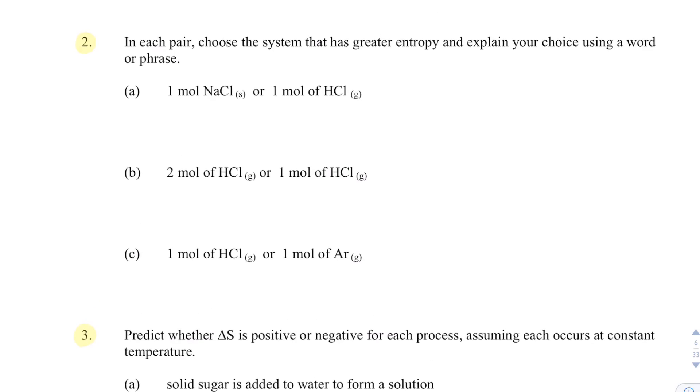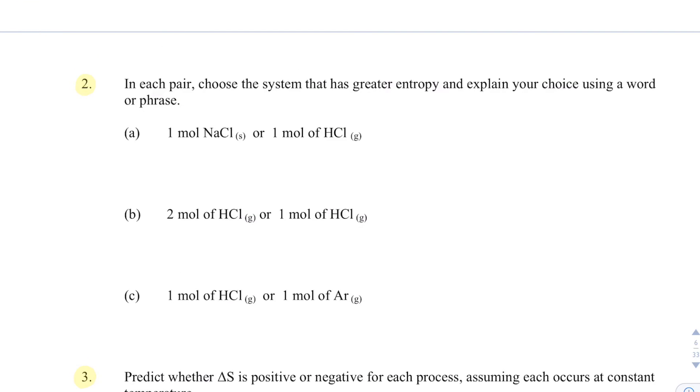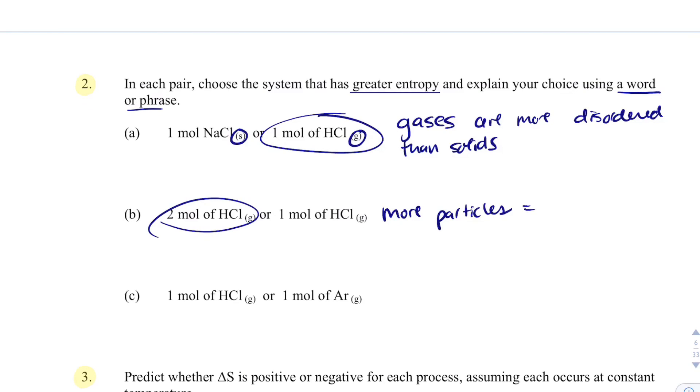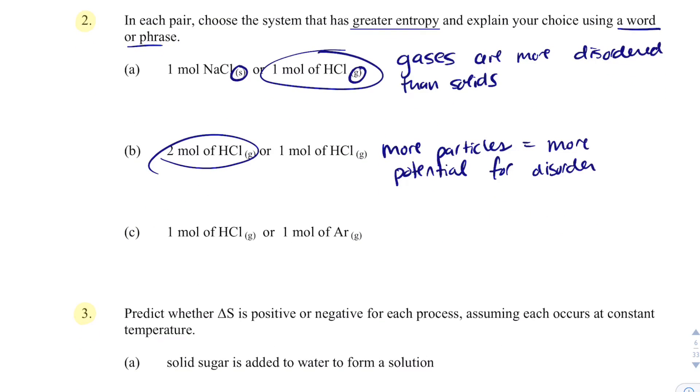If we're comparing NaCl versus HCl, NaCl solid versus gas, and we want to know which has the greater entropy and explain why using a word or phrase, I'd circle this - it's gas. So I would say gases are more disordered than solids. Looking here they're both gases, so I can't use the state of matter, but what I can say is that this has more - more stuff, more particles - which equals more potential for disorder.